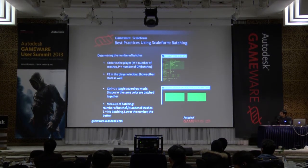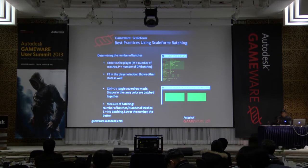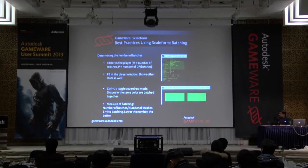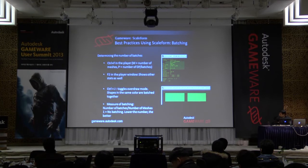A useful measure for estimating batching performance is the number of batches divided by the number of meshes. This is an indicator of batching performance, and you want this number to be as low as possible. You want as many of your meshes to be put in one batch. If this ratio is one, that means you have as many batches as meshes, which means you're not getting any batching at all.